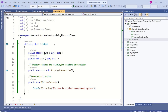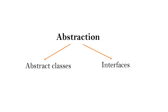Whenever any class uses Student as a base class, that class has to provide implementation to DisplayInformation. This is how we can achieve abstraction using abstract classes. There is one more way to achieve abstraction — that is interfaces — which we will discuss in the next session. I hope you are clear with abstract classes. See you soon in the next video. Thank you.